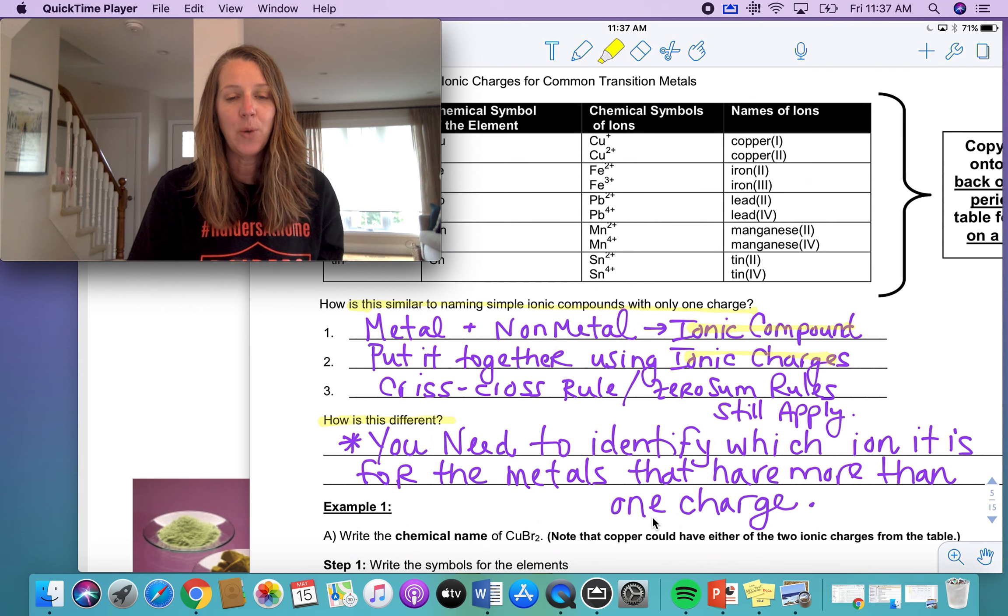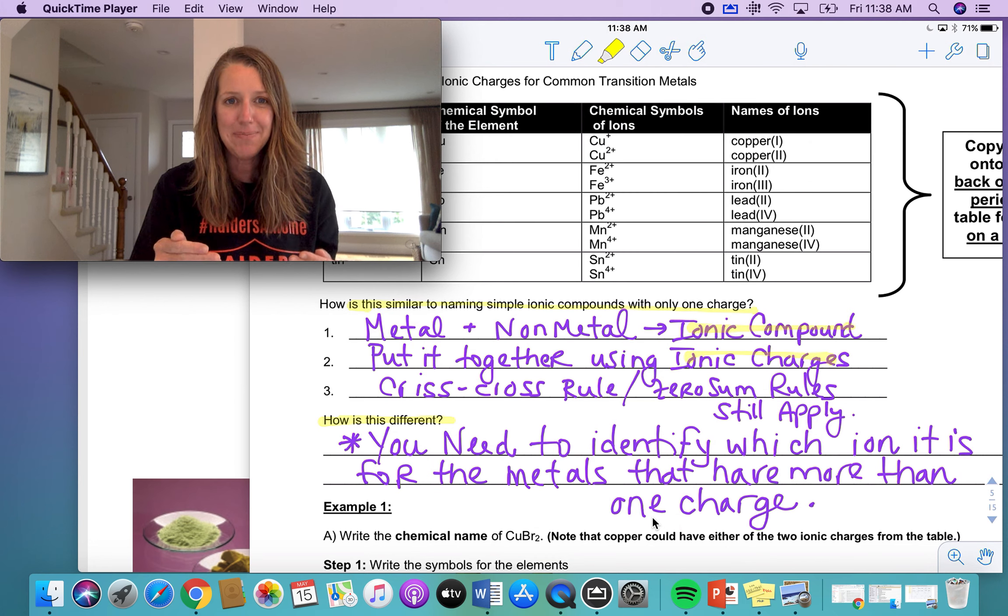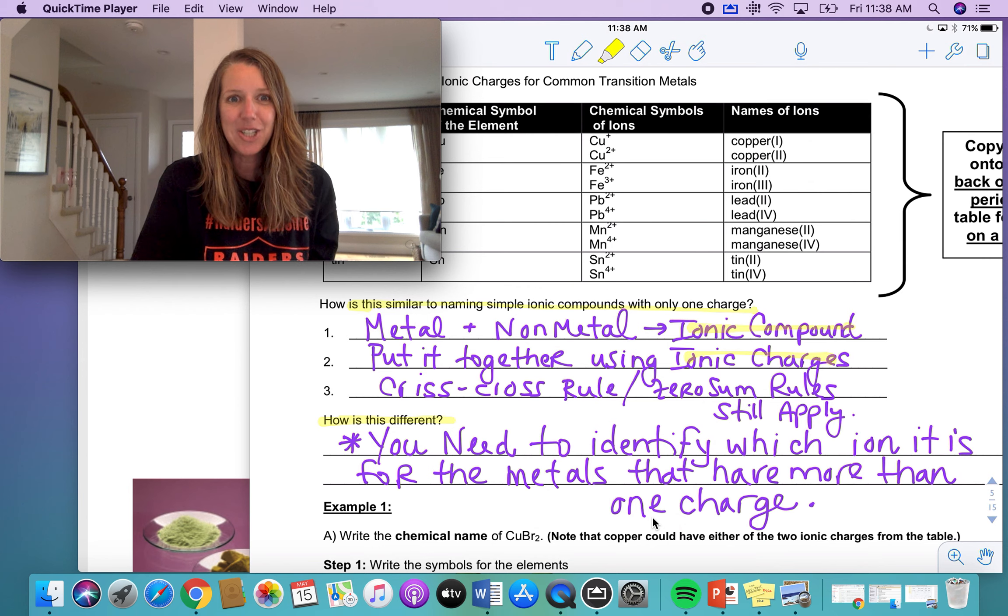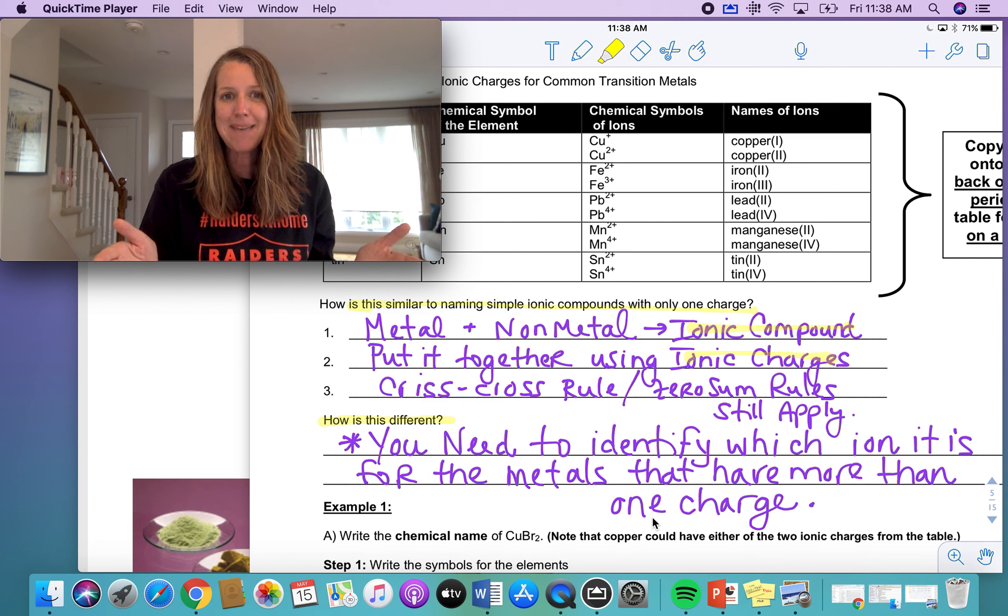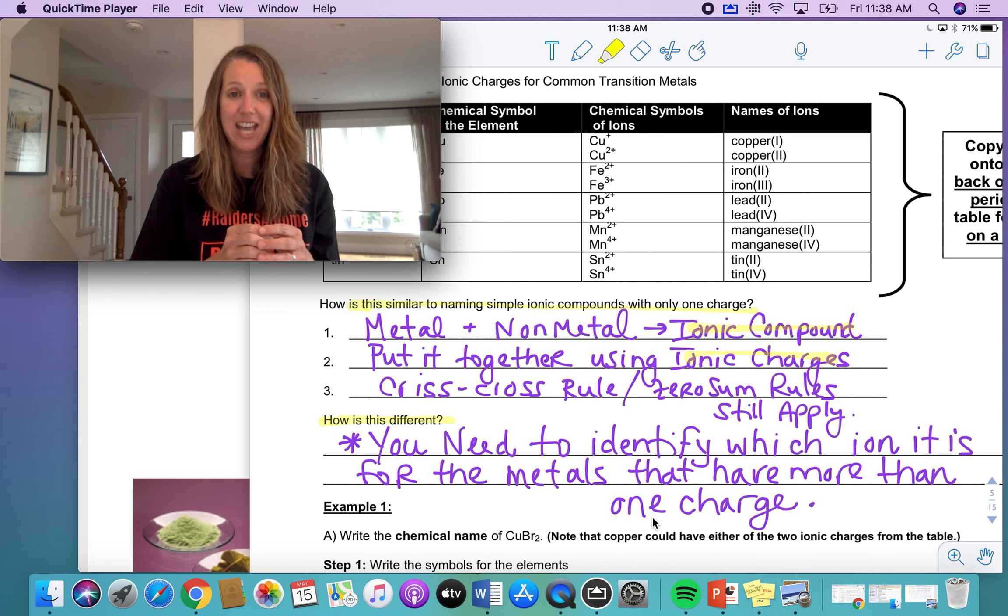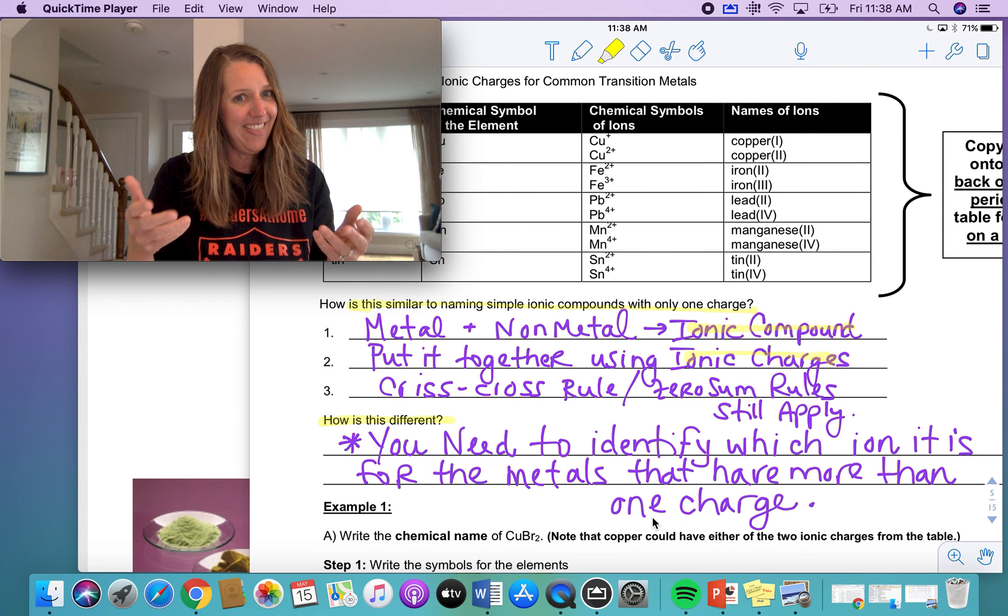It's different in that when you do the name for these ones, you actually put right in the name the charge that these metals have. So this is tricky a little bit because first of all, you need to be able to find it on the periodic table and then say, is this a metal that has more than one charge? And if it has more than one charge, then in the name, you actually have to put in Roman numerals the charge that's associated with the ion that's in that compound.